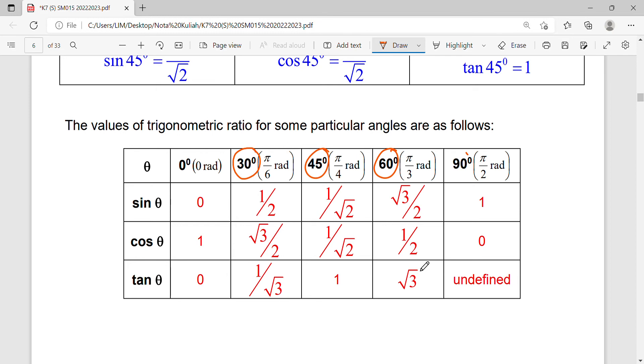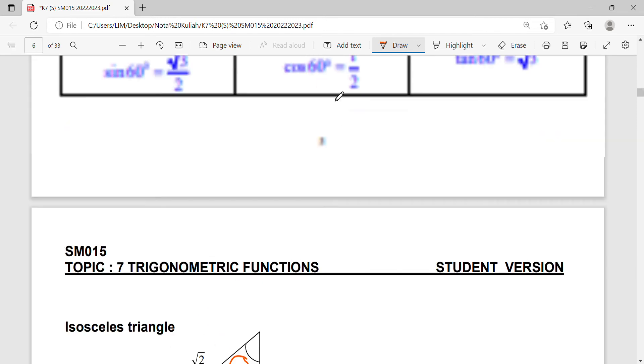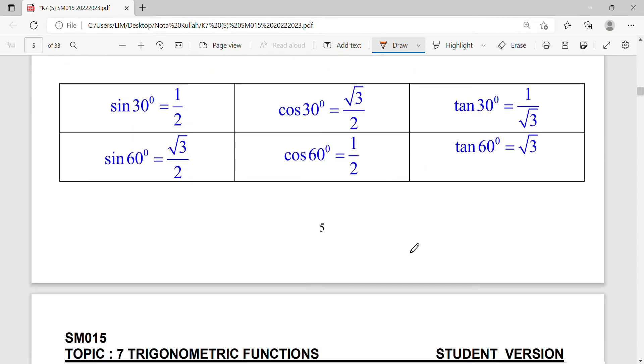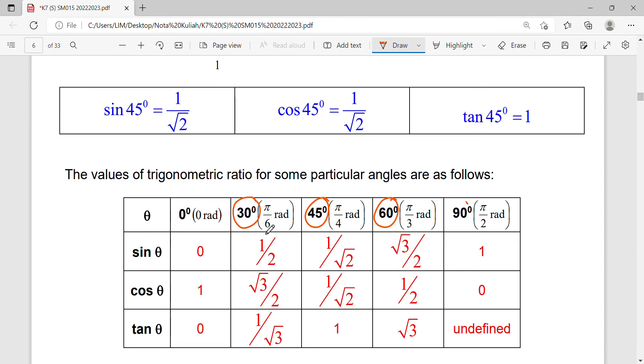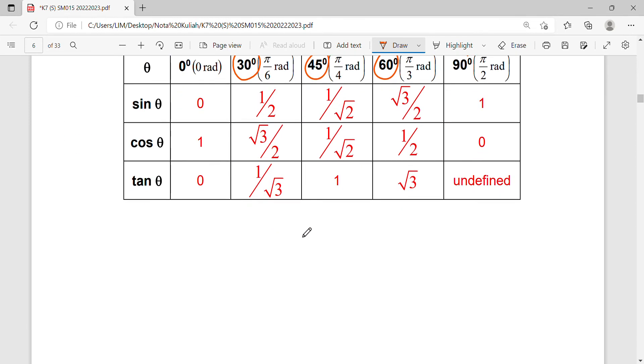Besides the special angles 30 degrees, 60 degrees, and 45 degrees from triangles, you can revise Topic 5 where you learned trigonometry functions. Some angles have special values.